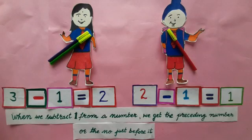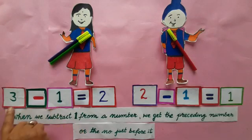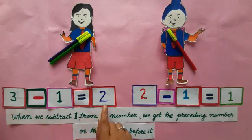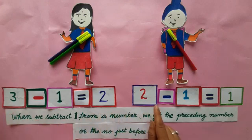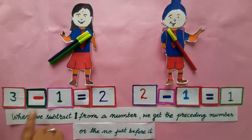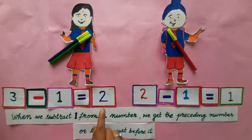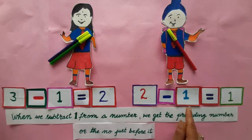Children, when we subtract 1 from a number, we get the preceding number, or the number just before it. 3 minus 1 is equal to 2. 2 minus 1 is equal to 1.